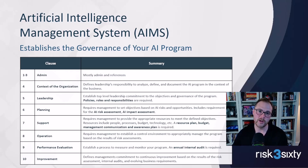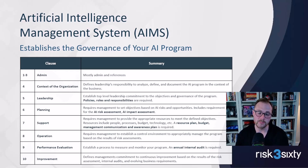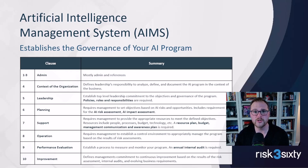This is a huge work stream with a lot of organizational change involved when implementing a management system — this is where the big thinking happens when putting a program in place. That's an AI management system overview. Next, we'll talk about the 38 controls and objectives related to AI certification and give you clarity on what that looks like.